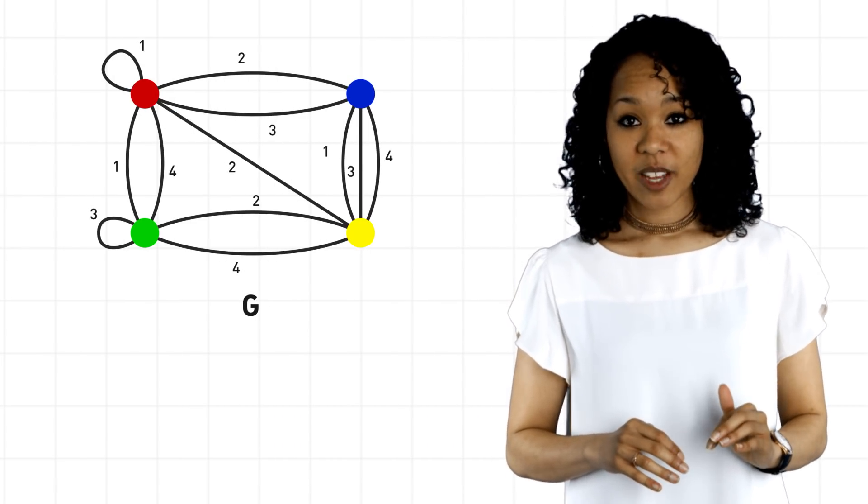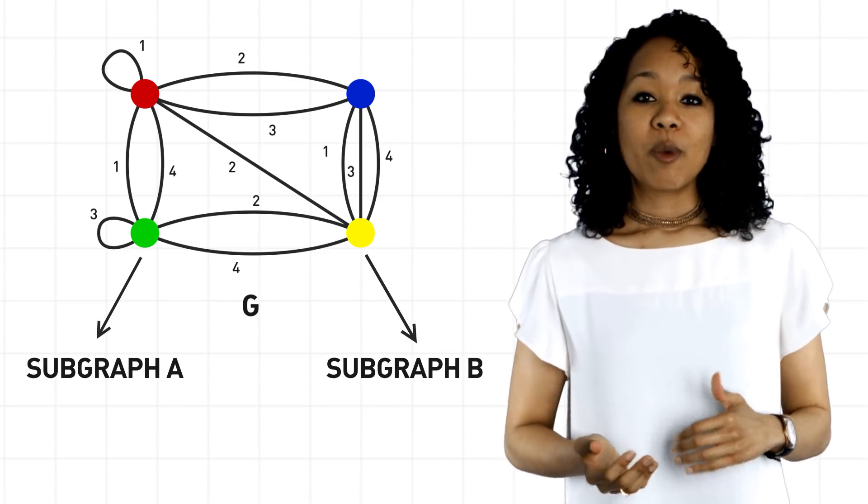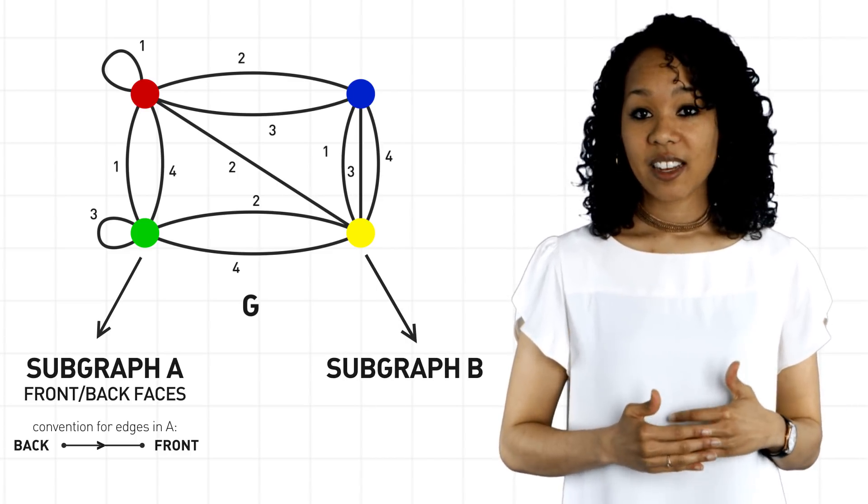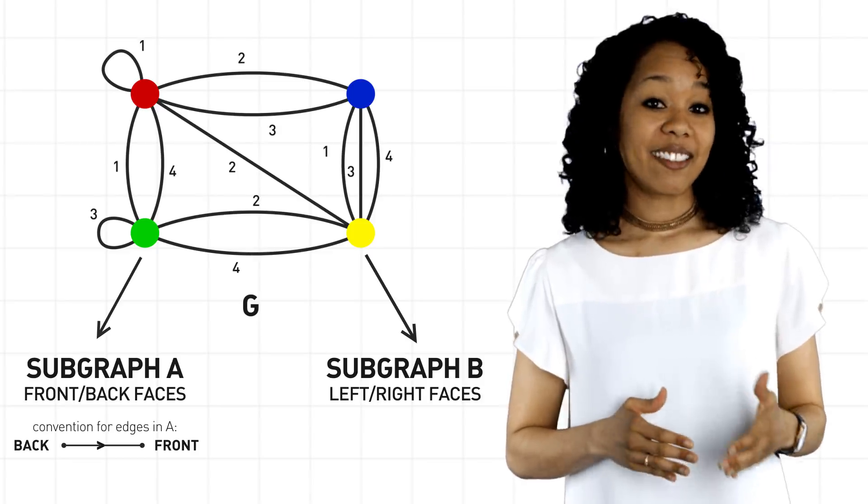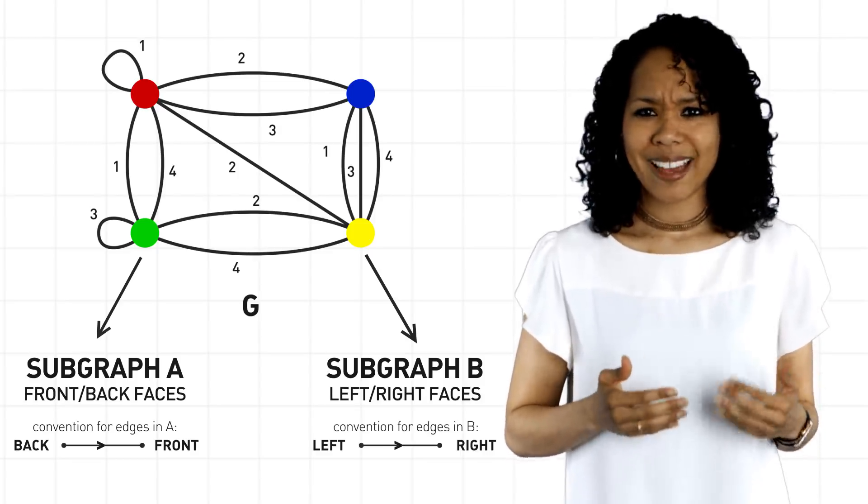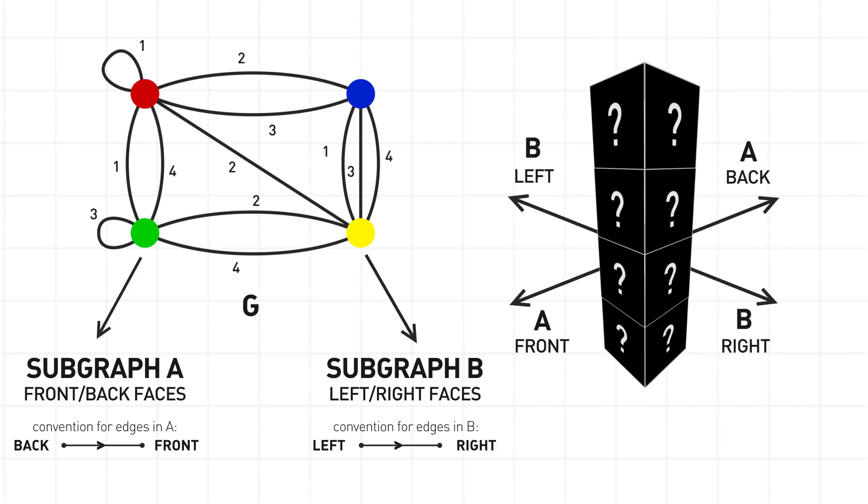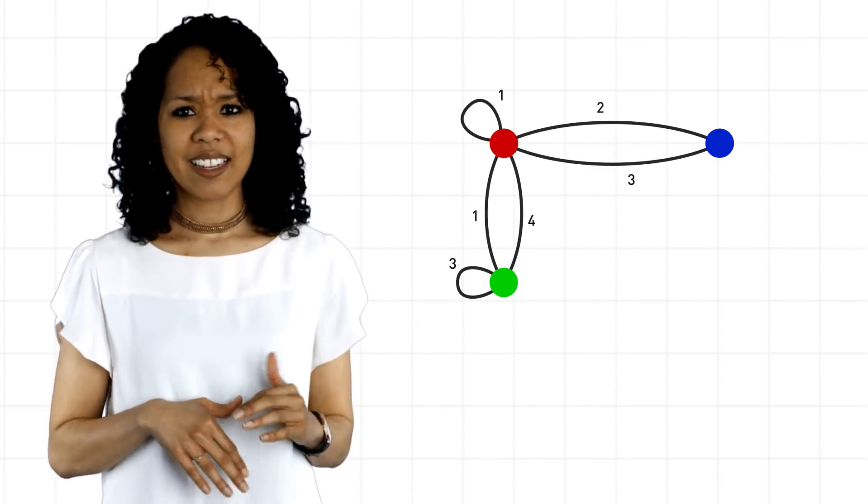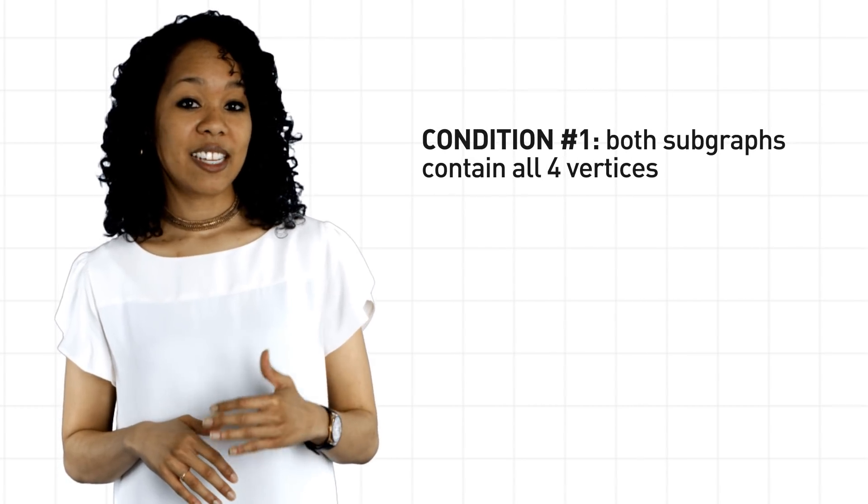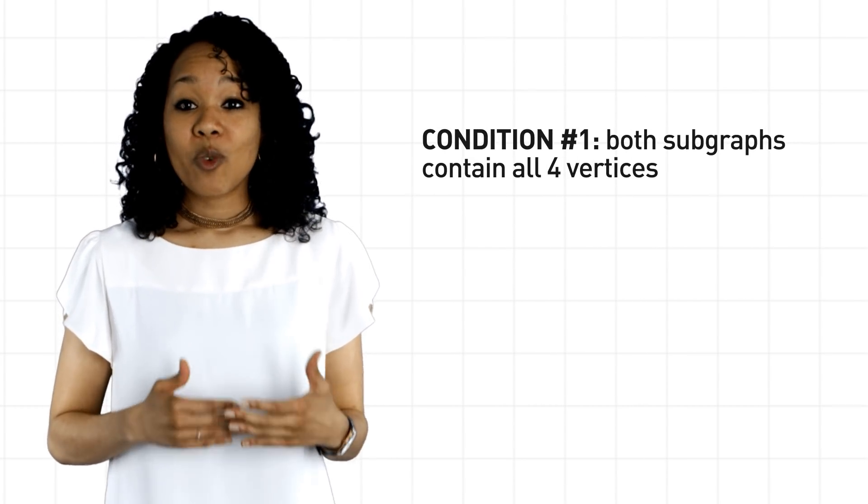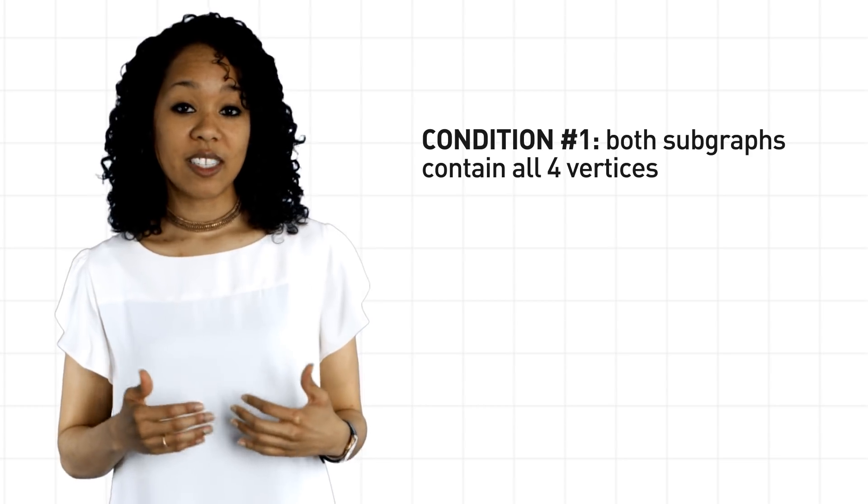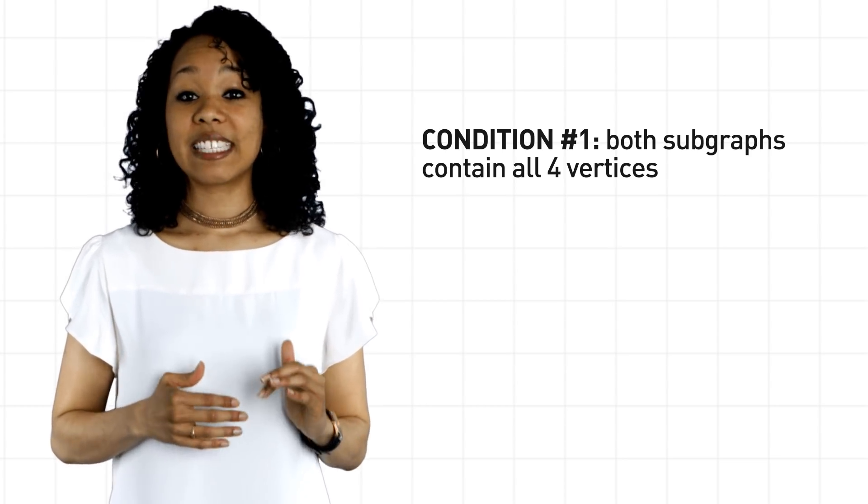So here's the plan. To solve the puzzle, let's find two subgraphs of the graph G. I'll call them A and B. A will represent the front and back faces of the stack, while B will represent the left and right faces. But how do we know what A and B should be? Well, let's just think about the front and back faces of the stack, subgraph A, for now. We want all four colors to appear, right? That means the subgraph should have exactly four vertices, so nothing like this. And the same is true for the second subgraph. We want all four colors to appear on the left and right faces of the stack, so A and B should have exactly four vertices.